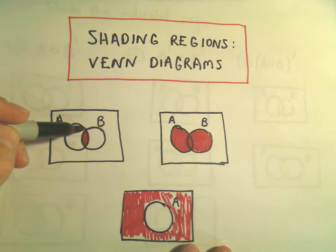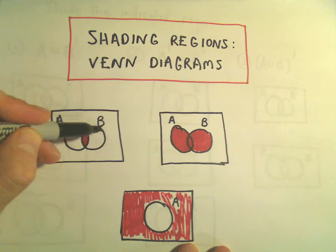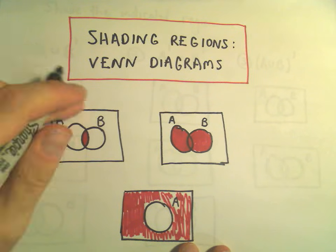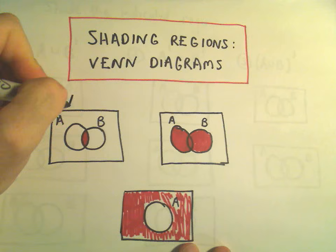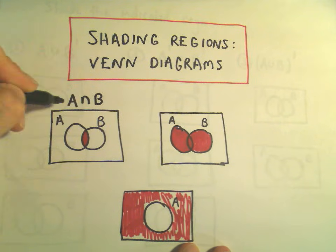In this first example here, I've got my circle A that stands for the set A, and my circle B that stands for the set B. Notice we have the overlap shaded, or the intersection, the part that's in common. So in this case, what we have shaded is the set A intersect B, the stuff shaded in common.